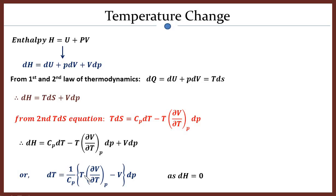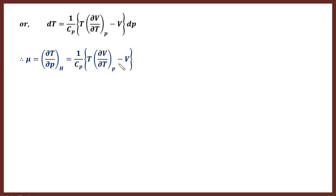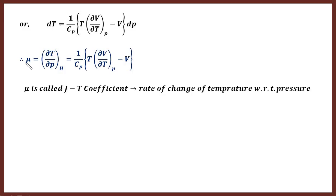Setting dH = 0, we find: dT = (1/Cp)[T(∂V/∂T)_P − V]·dP. Therefore, (∂T/∂P) at constant H equals (1/Cp)[T(∂V/∂T)_P − V]. This expression is denoted by μ, which we call the Joule-Thompson coefficient or JT coefficient. It gives us the rate of change of temperature with respect to pressure.